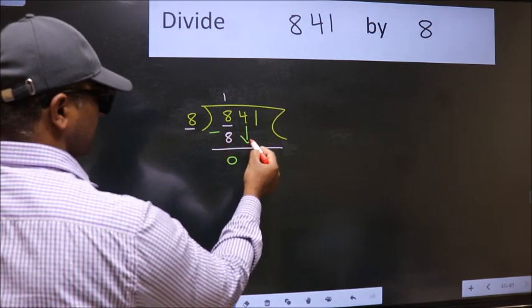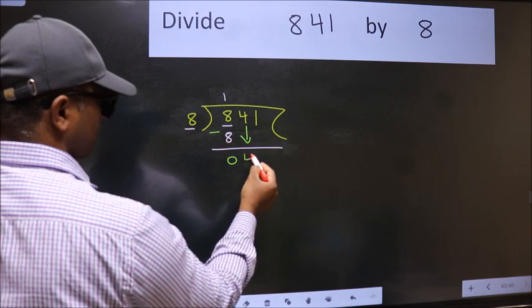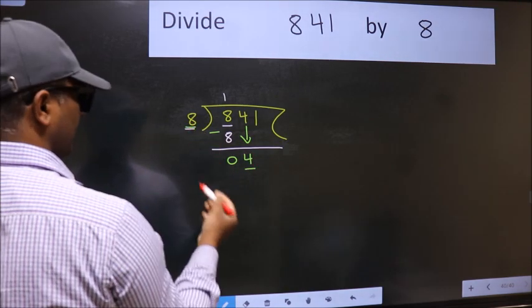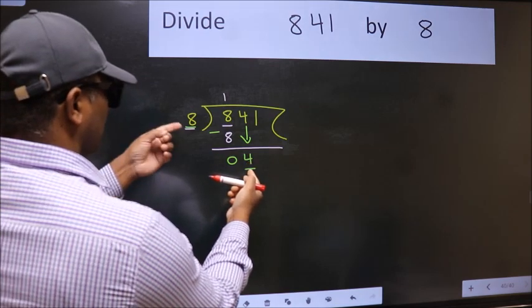After this, bring down the beside number. So, 4 down. Now, here we have 4 and here 8. 4 is smaller than 8.